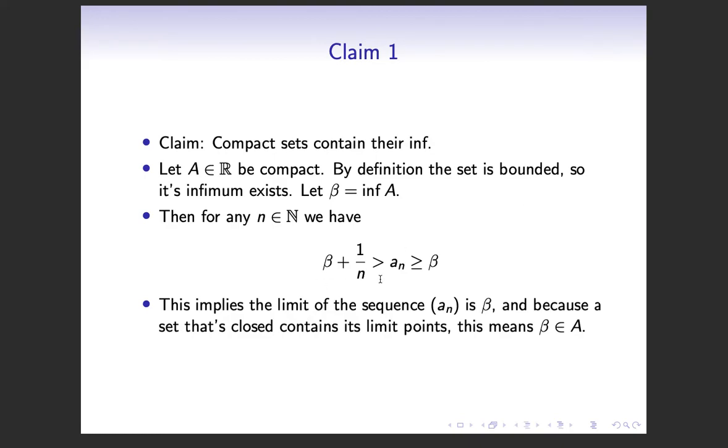So we'll let beta equal the inf of A. And then just using the epsilon definition for infima, this tells us that for any n, we have that beta plus 1 over n is going to be greater than a_n, which is going to be elements of A, which in turn is greater than or equal to beta.